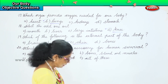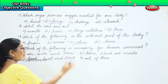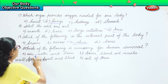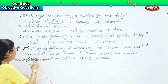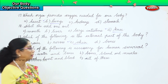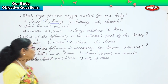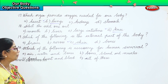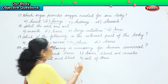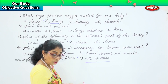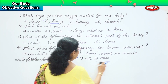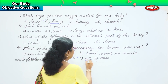The question is which of the following is necessary for human survival. You need air, water, bones, blood, muscles, food, and heart. So the answer is all of these — option D. All of these are necessary for human survival.